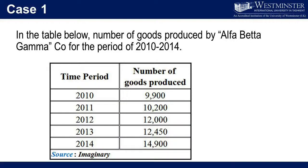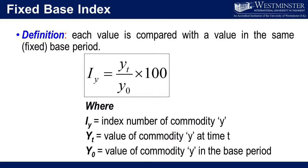Let's consider the first case. In the table below, the number of goods produced by Alpha Beta Gamma Co. for the period of 2010 to 2014. In order to compute fixed based index, we compare each value with the value in the same base period, or fixed period. As you can see in this formula, we take one year as a base year and divide the current year, which is yt, by y0, the base year, and simply multiply by 100. Where iy is the index number of commodity y, yt is the value of commodity y at time t, and y0 is the value of commodity y in the base period.